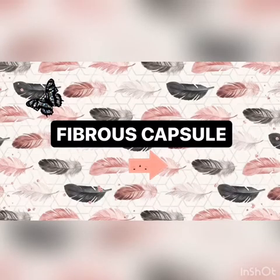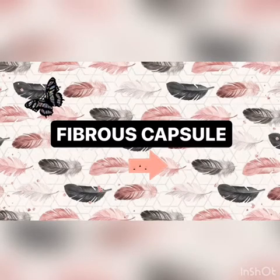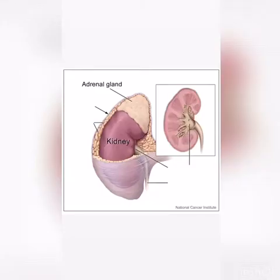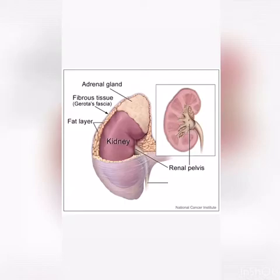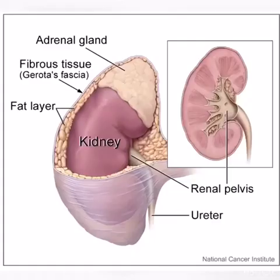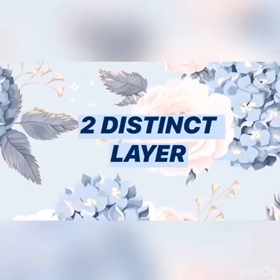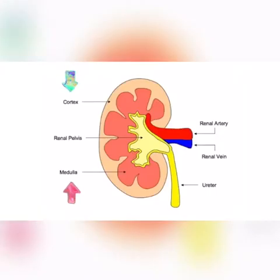The kidneys are surrounded by a fibrous capsule. As you can see, there is an adrenal gland, also a fibrous tissue, the renal pelvis, the fat layer, and also the ureter. This kidney consists of two distinct layers — as you can see, the cortex and the medulla.